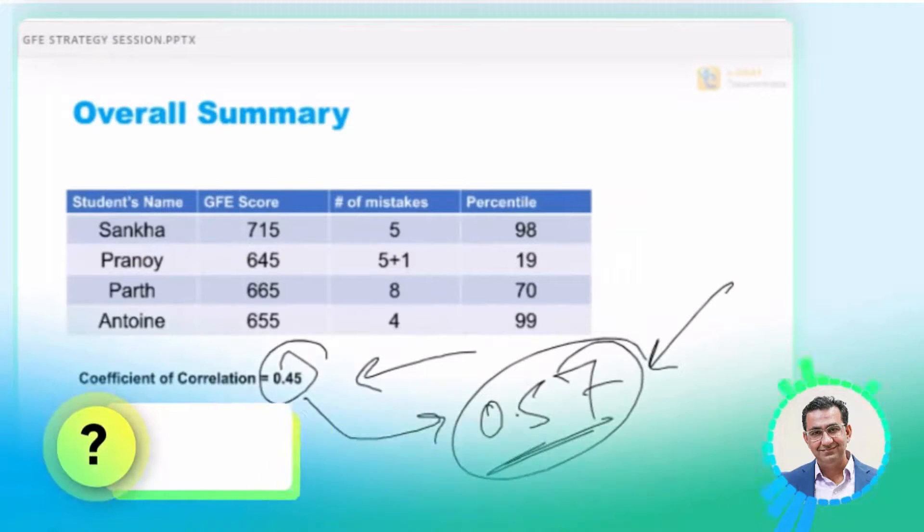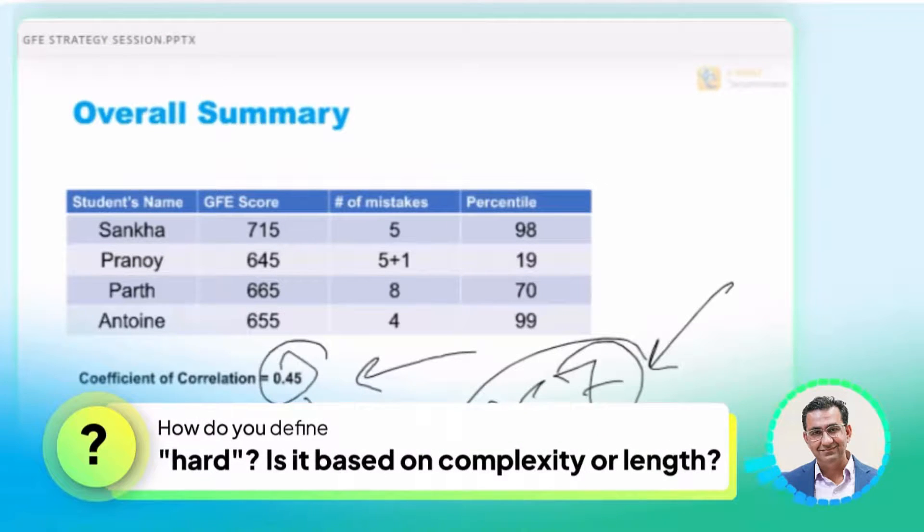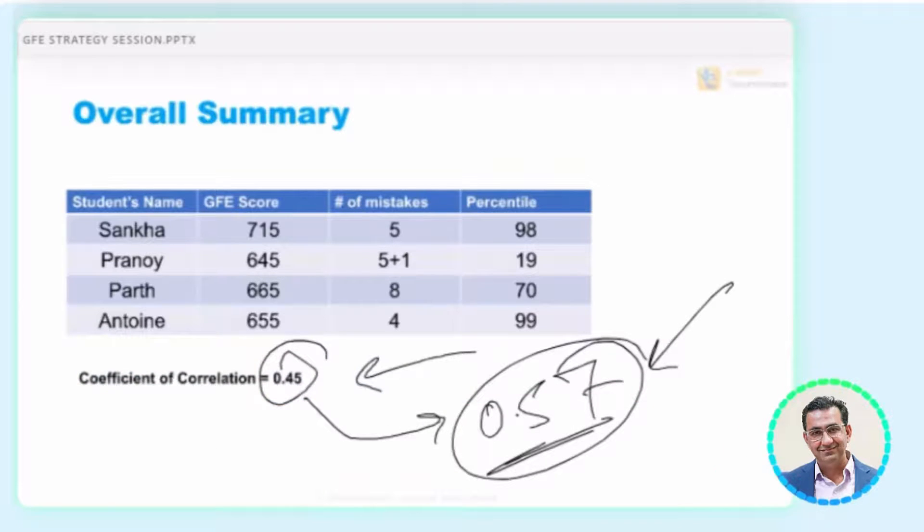Satyam Veda has a great question. He says, how do you define what hard is? Is it the complexity or is it being lengthy? That's a great question. Now, there's one simple definition of hard, which is if the question, the accuracy on a particular question is about 40 to 45 percent, then it's in the hard category. Once it starts to go above 55 percent, then it goes in the medium category. If it's between 45 and 55, then it's in the medium hard category.